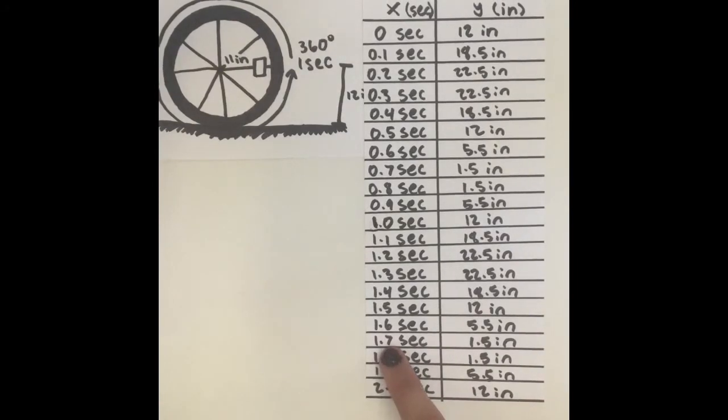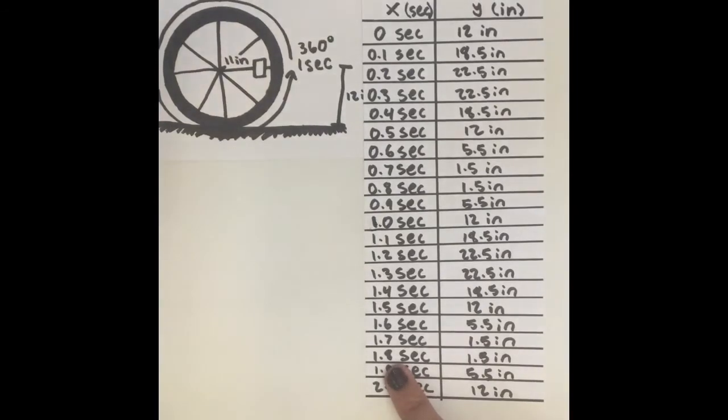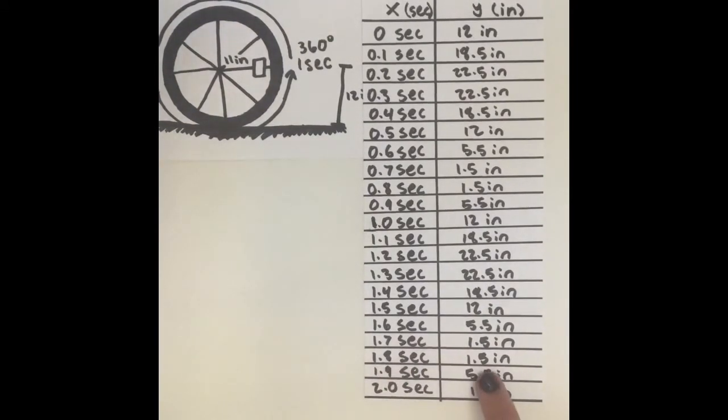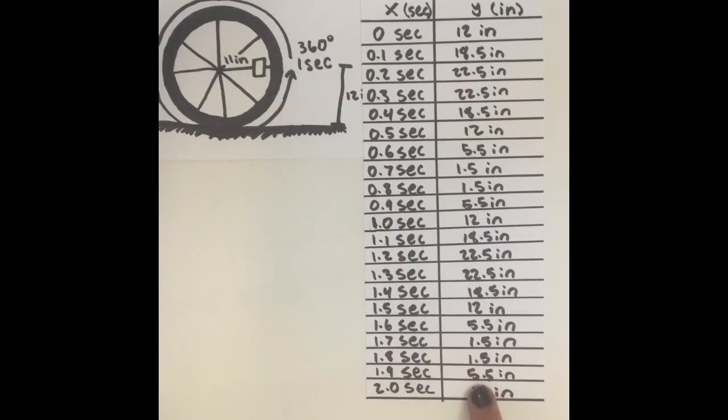At 1.7 seconds, the reflector is at 1.5 inches. And at 1.8 seconds, the reflector is at 1.5 inches again. At 1.9 seconds, it's at 5.5 inches.